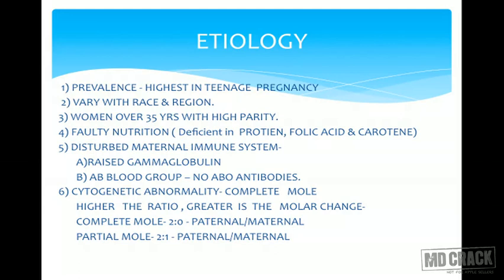Women over 35 years with high parity are at increased risk. Probable causes include faulty nutrition — deficiency of protein, folic acid, or carotene. Disturbed maternal immune system, raised gamma globulin, and specific blood groups (possibly when there are no ABO antibodies) are also implicated. Cytogenetic abnormalities are seen in complete mole.